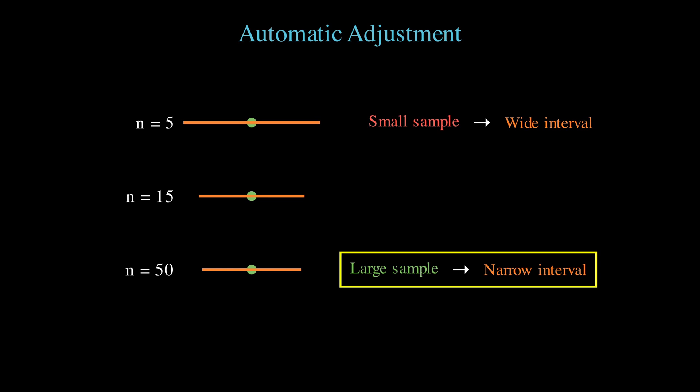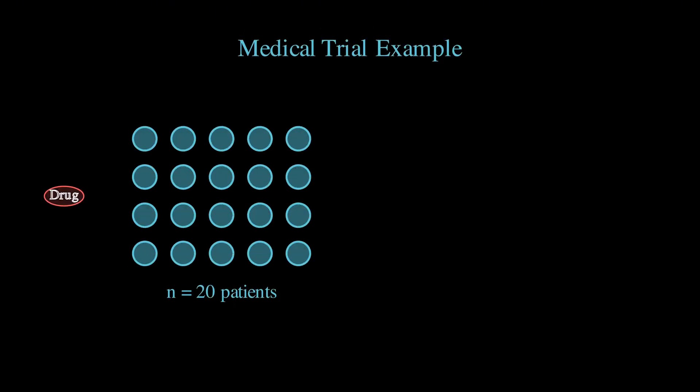The practical implications of understanding the t-distribution are huge, especially in fields like medicine, psychology, and quality control where sample sizes are often small due to cost or ethical constraints. For example, if you are testing a new drug and can only afford to test it on 20 patients, you need to use the t-distribution to properly account for the uncertainty in your results. Using the normal distribution instead would make you overconfident and could lead to wrong conclusions about whether the drug actually works.